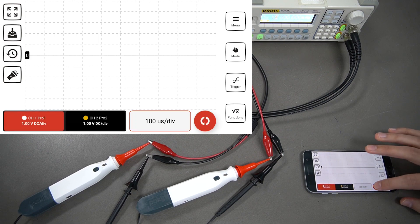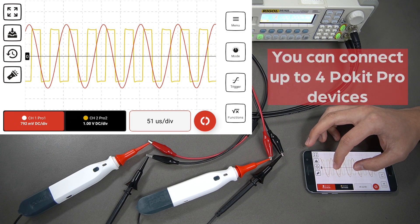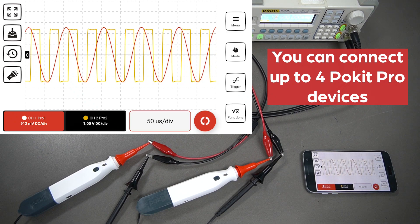We'll just take a reading here first. Since we have two Pocket Pros connected, we can use multi-channel functionality. These two Pocket Pros are synchronized to each other, so that's why you can see the two different readings there.